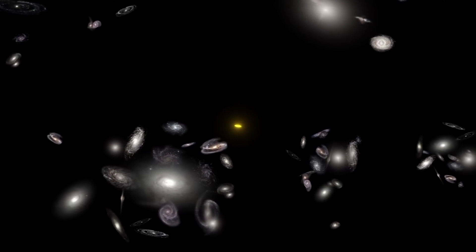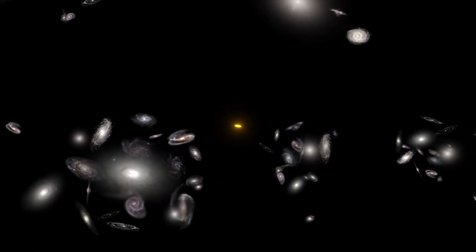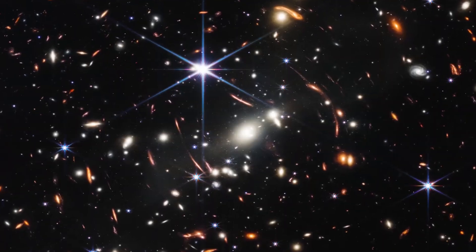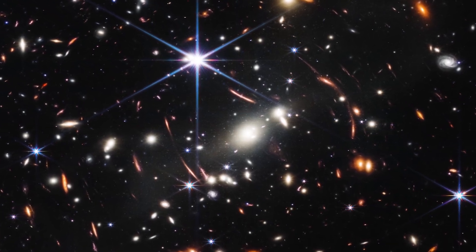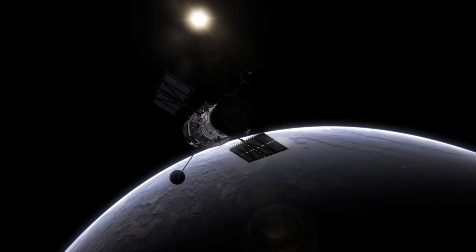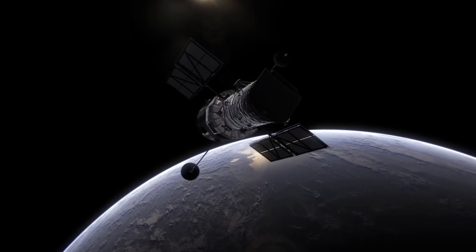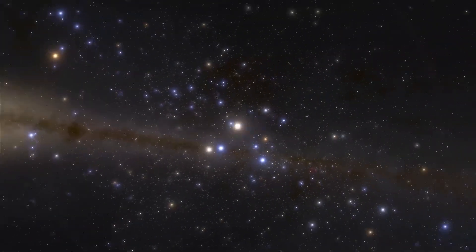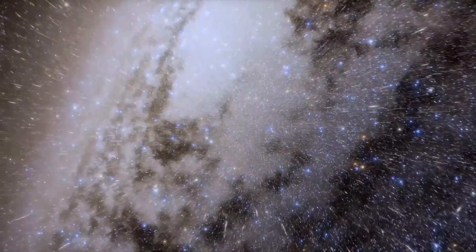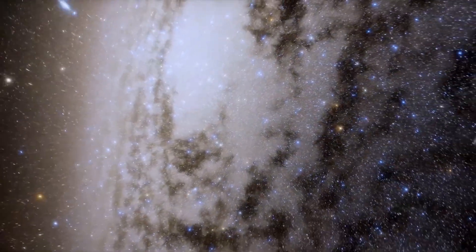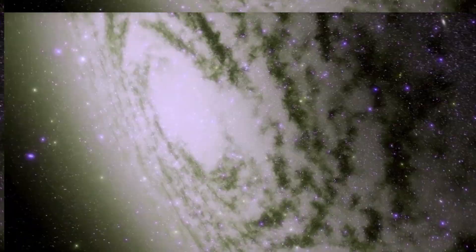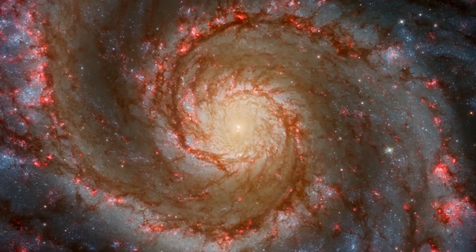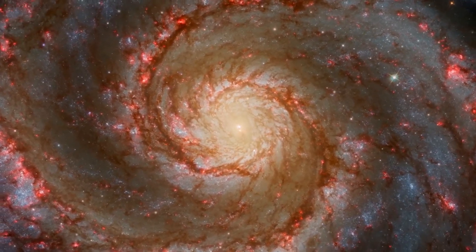The fact that the observed galaxies are two to three times smaller than similar galaxies imaged by the Hubble Space Telescope completely defies the expected behavior in an expanding universe. According to the hypothesis, as the universe expands, objects should appear larger as distance increases. However, these James Webb observations show galaxies that defy that expectation.